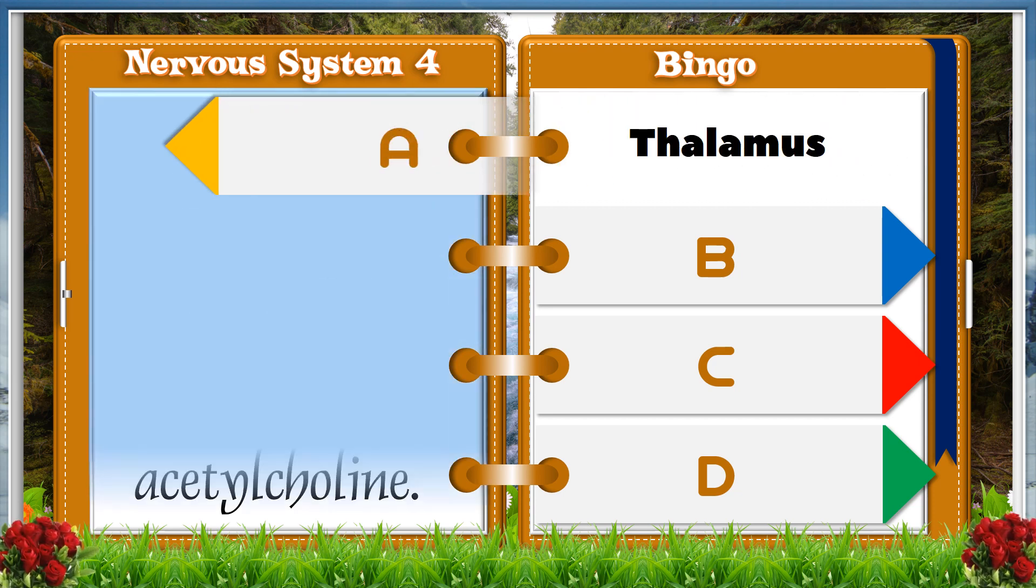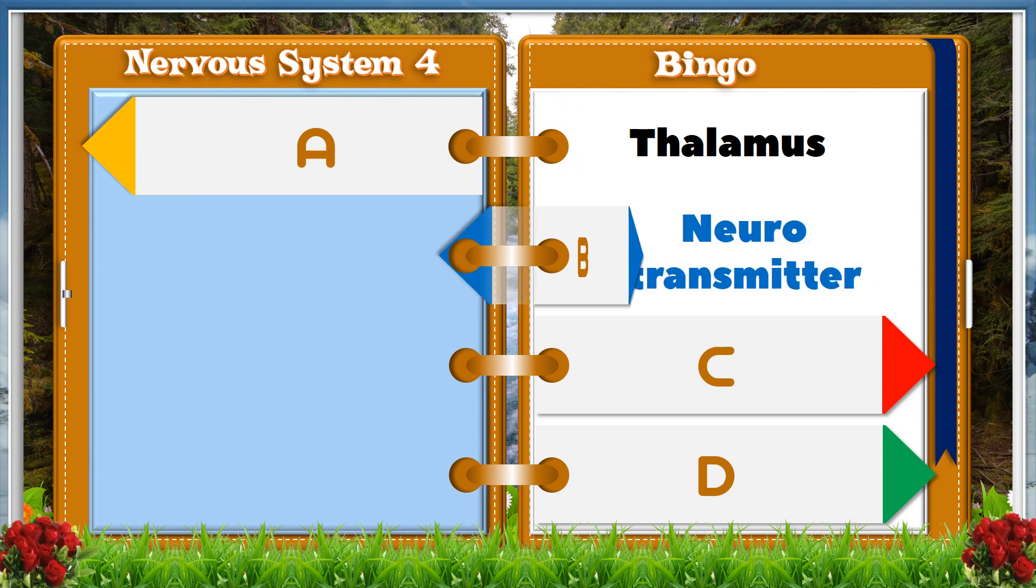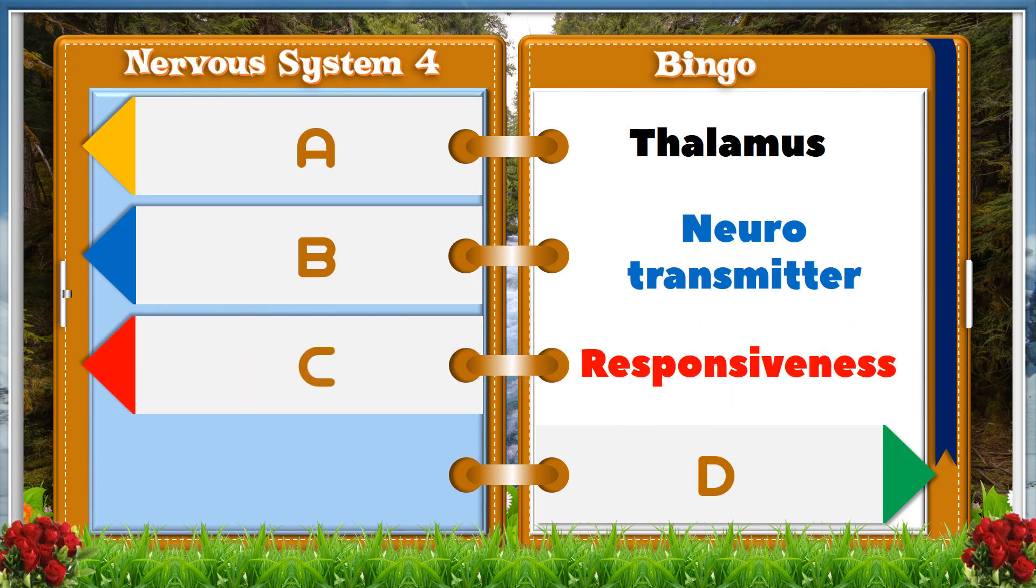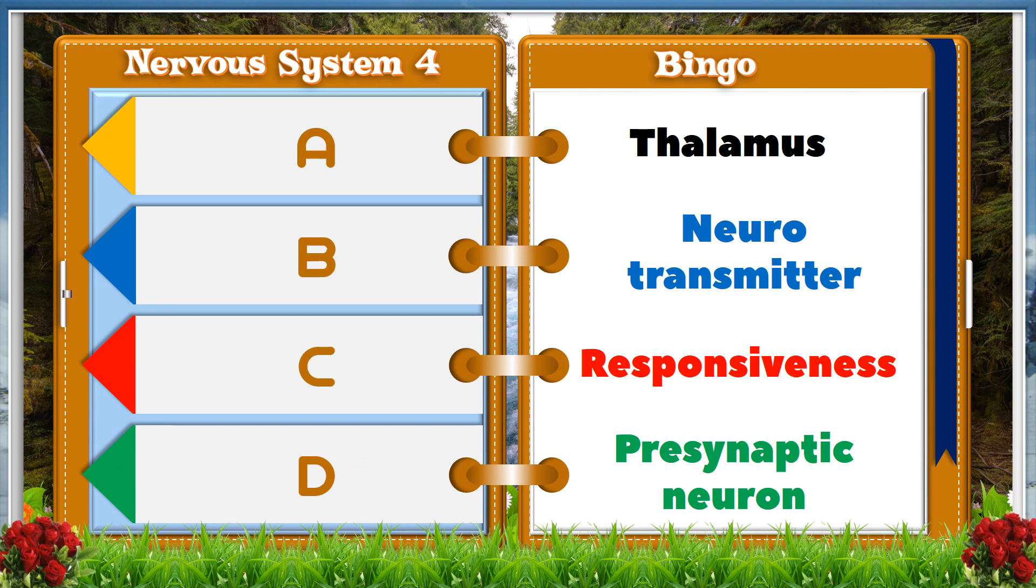A. Thalamus. B. Neurotransmitter. C. Responsiveness. D. Pre-synaptic neuron. And the answer is B. Neurotransmitter.